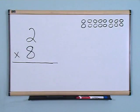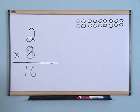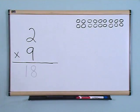2 x 8 is? 16. 2 x 8 is 16. 2 x 9 is? 18. 2 x 9 is 18.